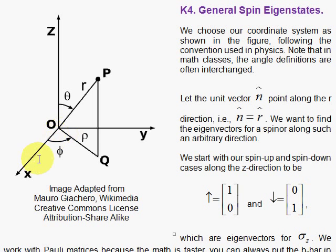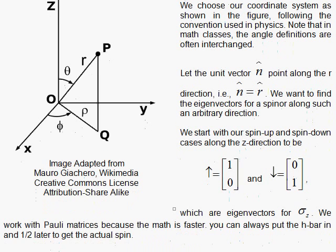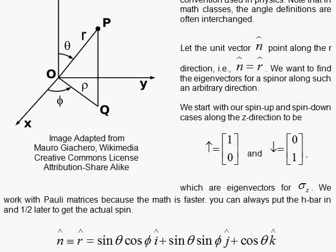In the xy plane, x is given by rho cosine of phi, and y is given by rho sine of phi. But remember, rho is sine of theta. So rho being sine of theta, we put the sine of theta in twice — cosine of phi for x and sine of phi for y. And z is cosine of theta.